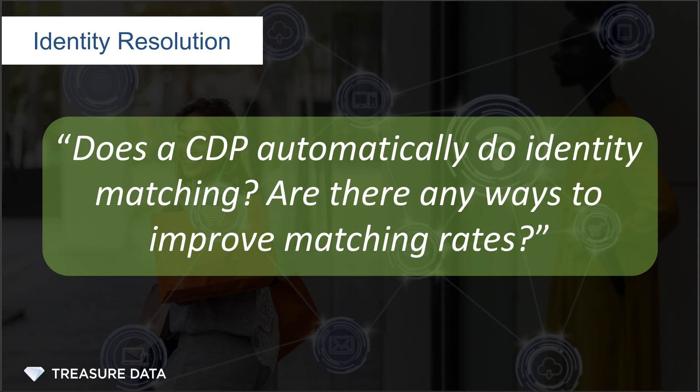Deterministic matching will match records on a defined attribute or set of attributes, and this will allow you to merge identities from multiple sources into a single record. You need to ensure that your CDP can use first-party cookies, as well as other system identifiers, to do matching and not have any limitations. With probabilistic matching, that will use algorithms to match records. The more data you can store in the CDP and use for probabilistic matching, the higher your matching rate will become.